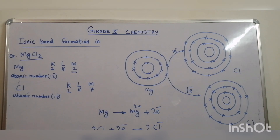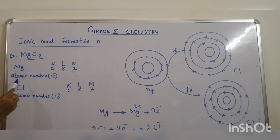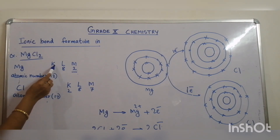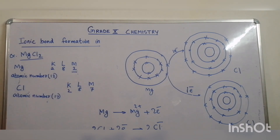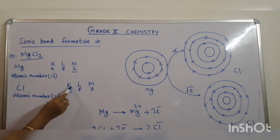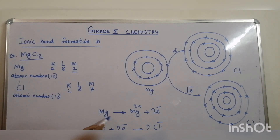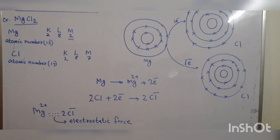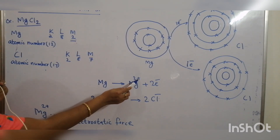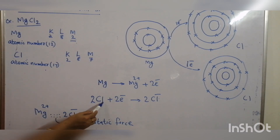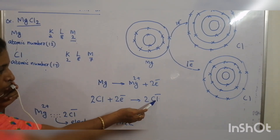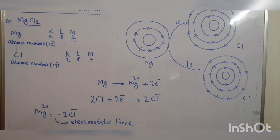Let us discuss ionic bond formation in magnesium chloride. Magnesium is a metal with atomic number 12. Electronic configuration is K2, L8 and M2. Chlorine is a non-metal with atomic number 17, electronic configuration K2, L8 and M7. If magnesium loses its two valence electrons, magnesium will be converted to a magnesium ion. And if chlorine gains those two electrons, chlorine will be converted to a chloride ion. Both magnesium and chlorine attain 8 electrons in the outermost shell.